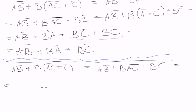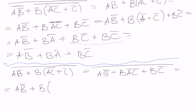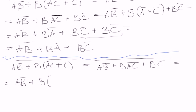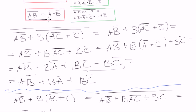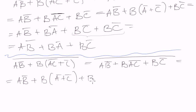Let's get rid of this part. In this case, A·B negated, plus B, then we have a bracket - basically we can apply this formula again, and we will get A negated plus C negated, plus B·C negated.